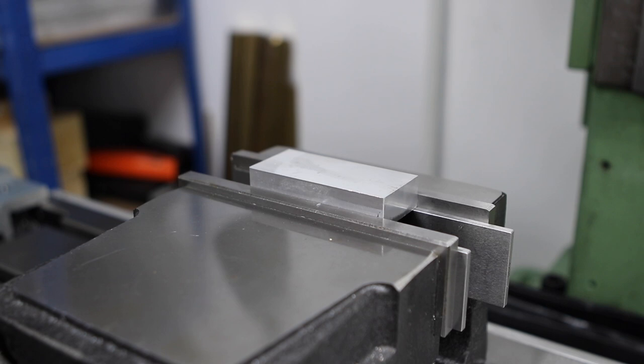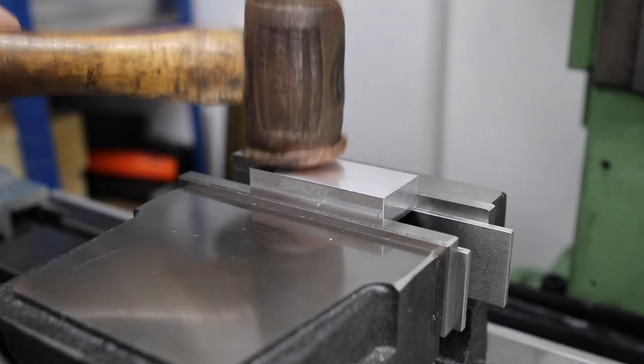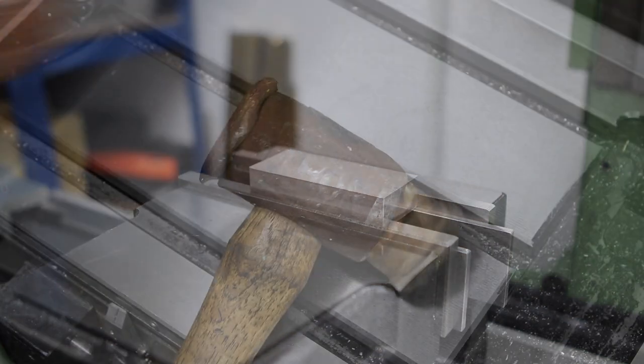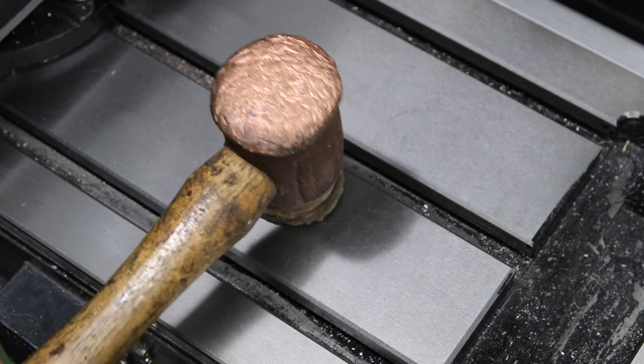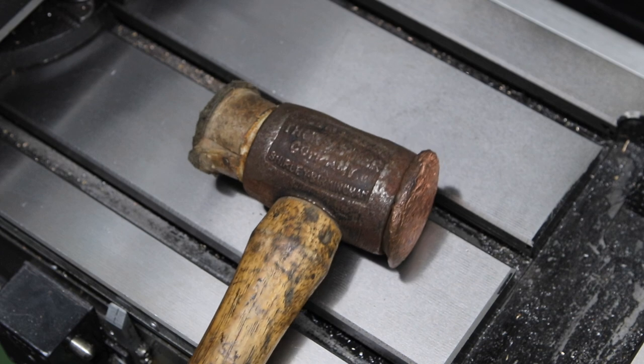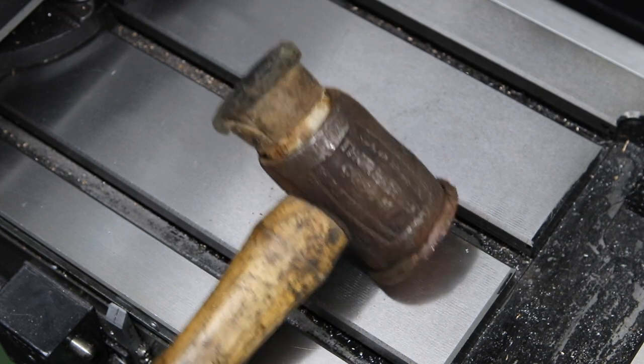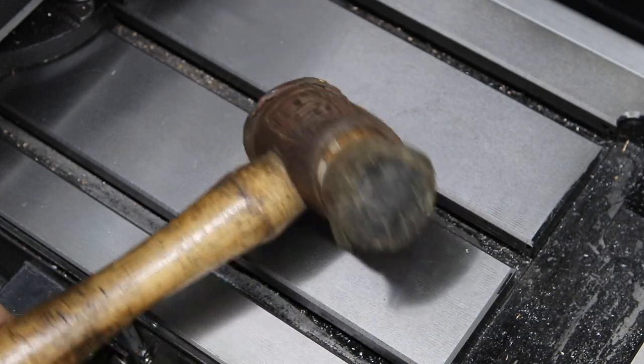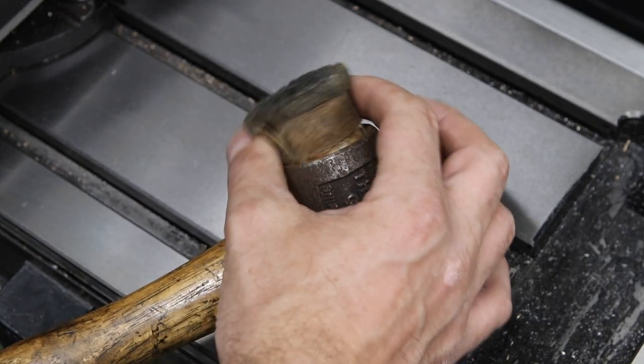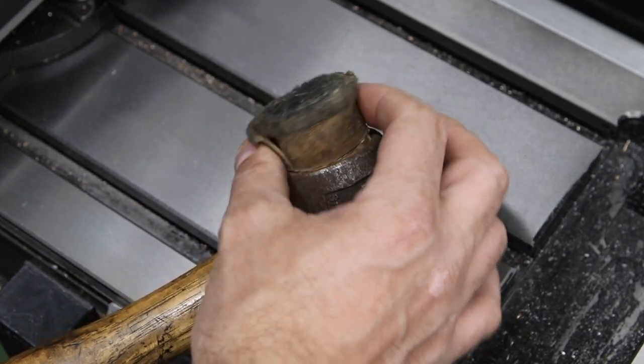Soft-face hammers have 101 different uses in the shop and I use mine mostly for tapping down stock in the vise. I've been using my grandfather's old copper and rawhide mallet and it's completely inappropriate for the kind of work I do. It's also seen better days, so I think it's time to make something more appropriate.